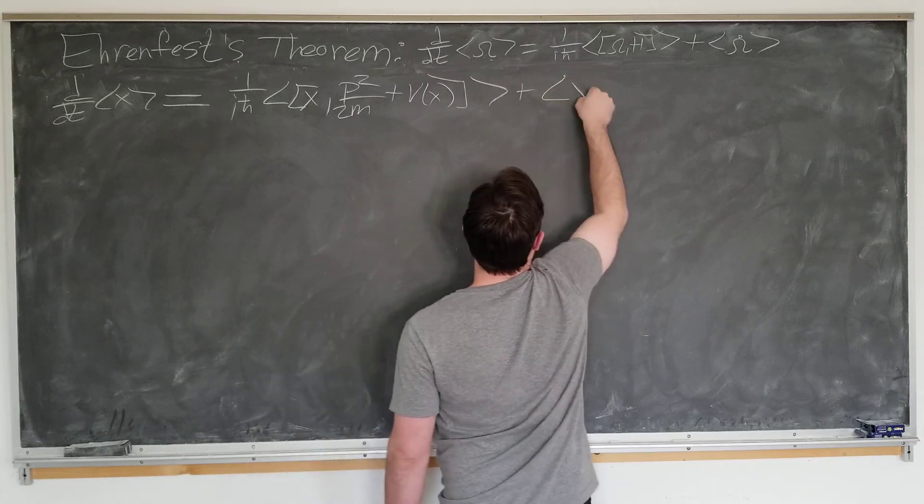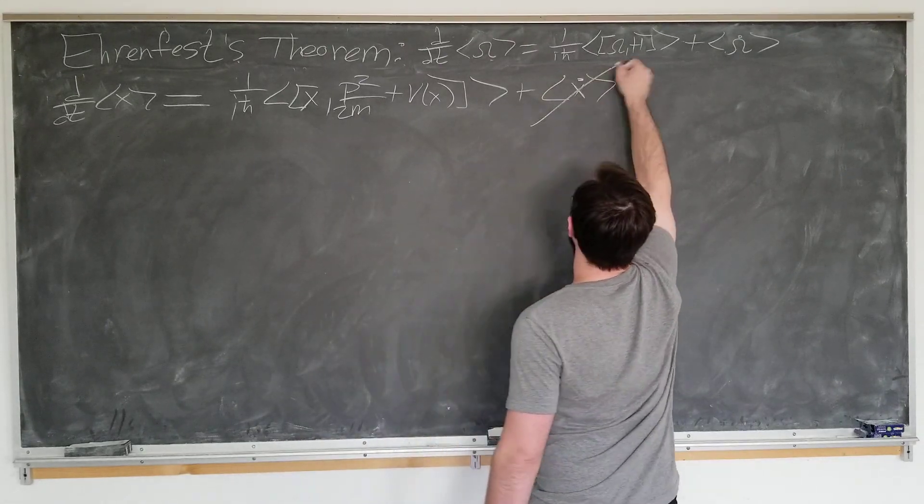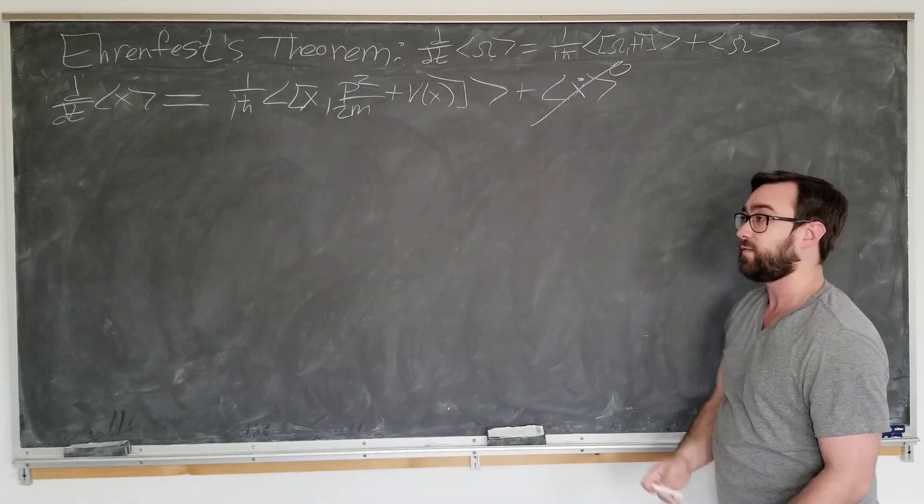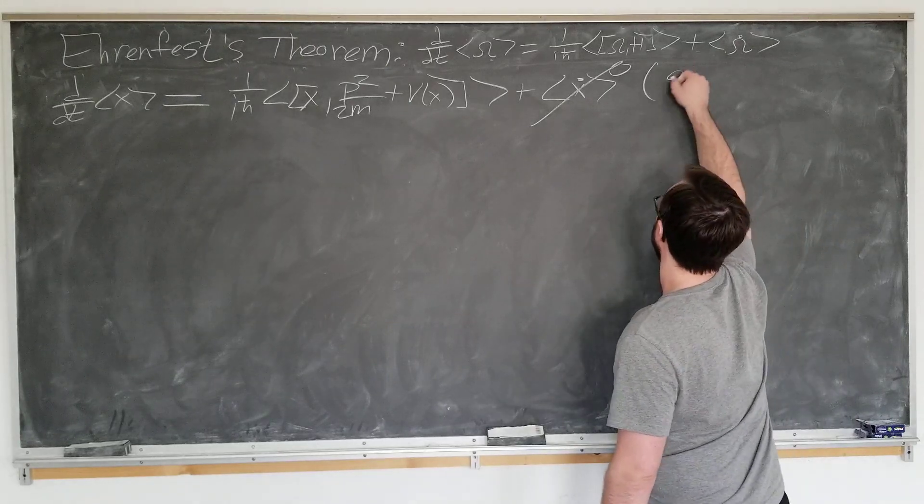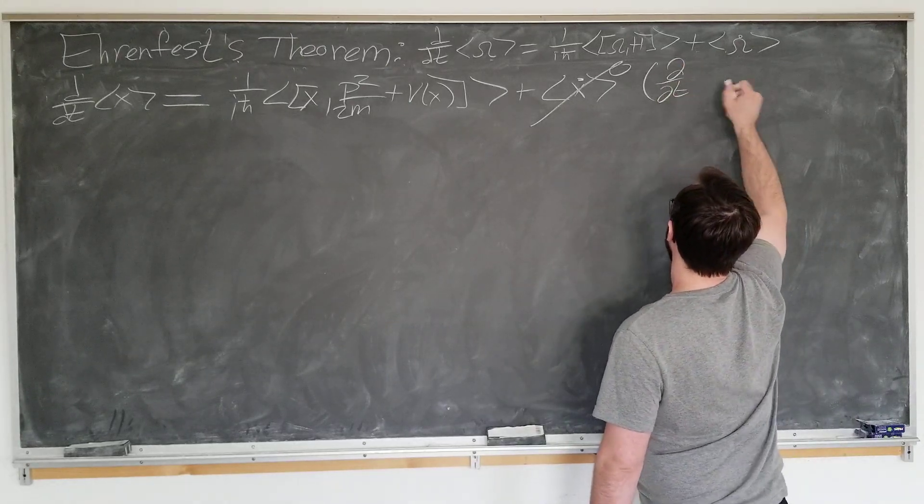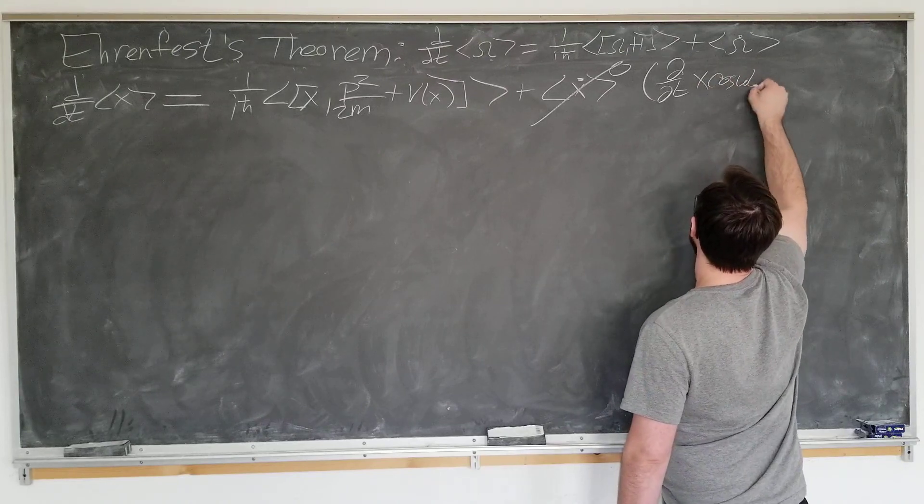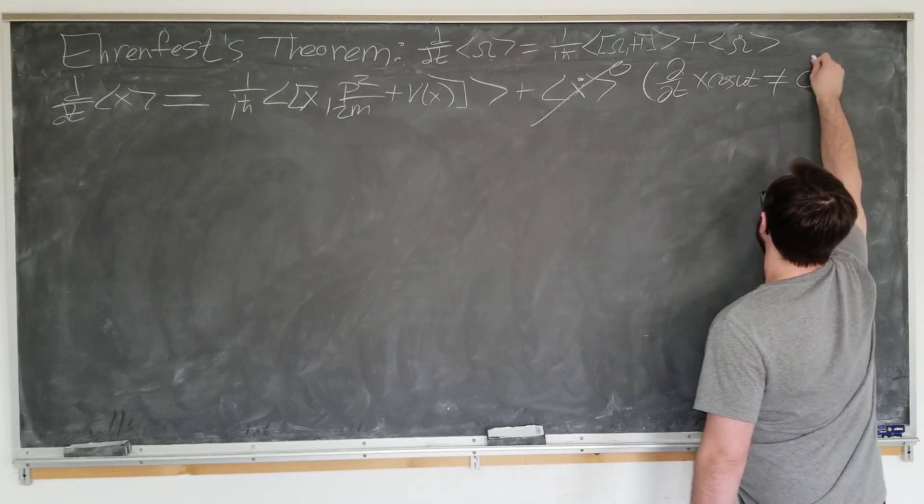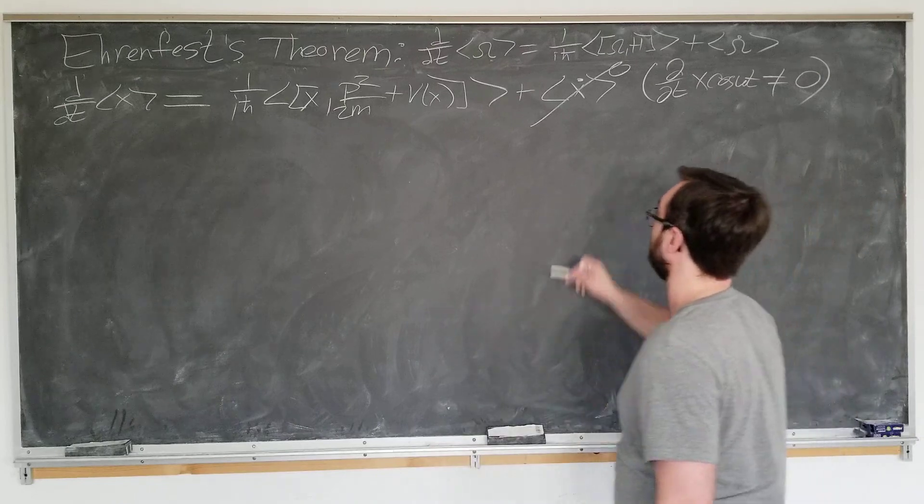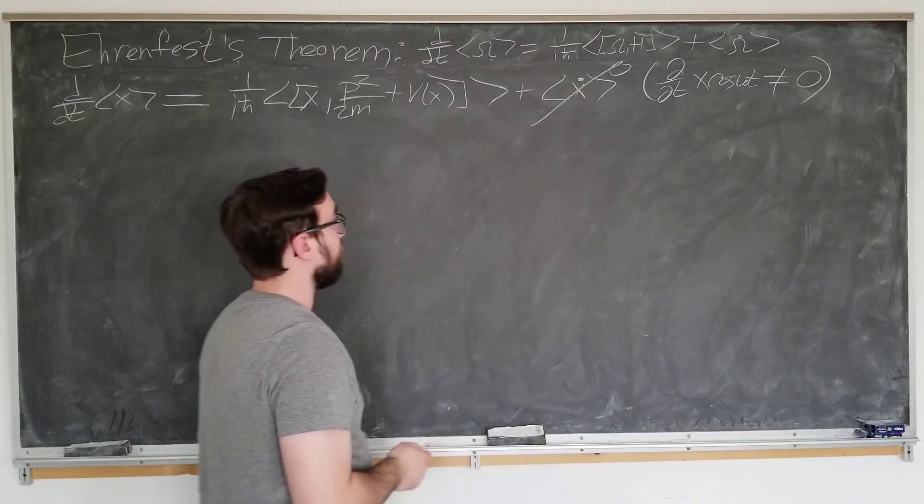Plus expectation value of x dot, which we discussed earlier is zero, since if you wanted to get something non-zero, we'd be discussing operators like x cosine omega t. There has to be an explicit time dependence at this stage to have something non-zero.